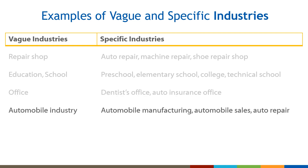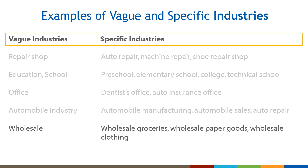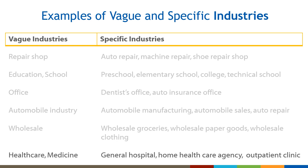Another common vague response is 'automobile industry.' A more detailed response would be automobile manufacturing, automobile sales, or auto repair. If they say they work in wholesale, ask what kind — a response might be wholesale grocery supplier, wholesale paper goods, or wholesale clothing supplier. Common responses where more detail is needed include 'healthcare' or 'medicine' — ask what type of facility they work at. Possible responses are general hospital, home healthcare agency, or outpatient clinic.